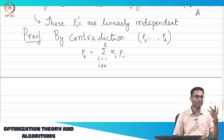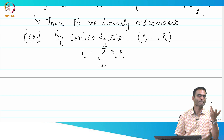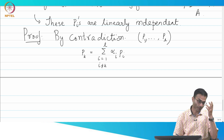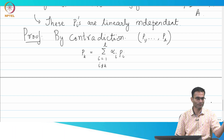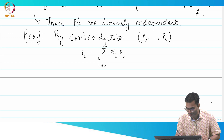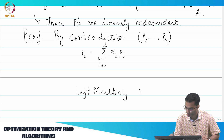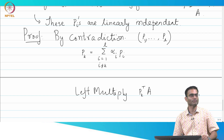Does this lead to a contradiction? What would your next step be? What do you know about these P's? I need to somehow get A into action. If I want to get A into action, I left multiply by A and then left multiply by some other P. So the best thing is to left multiply by PK transpose A.